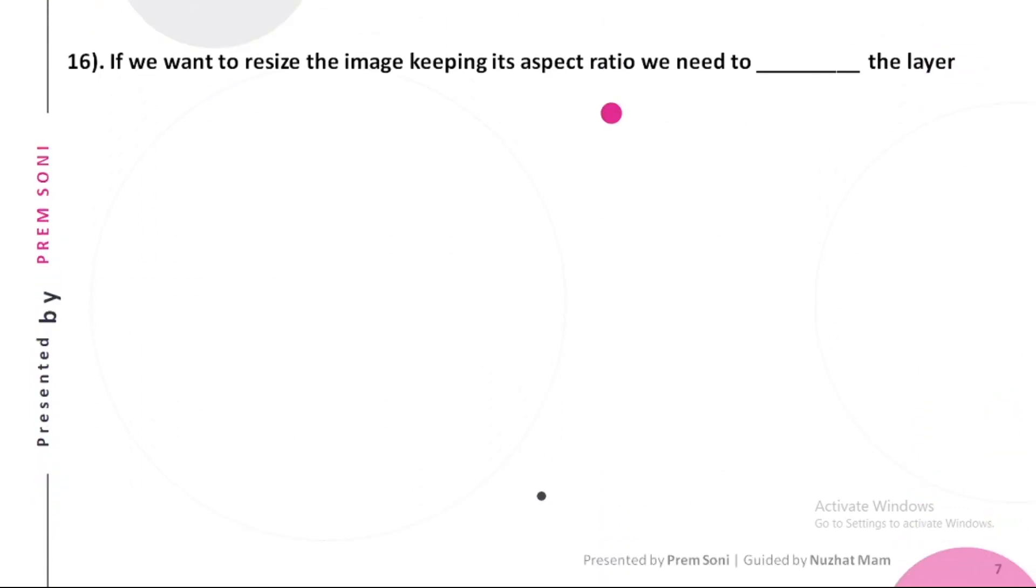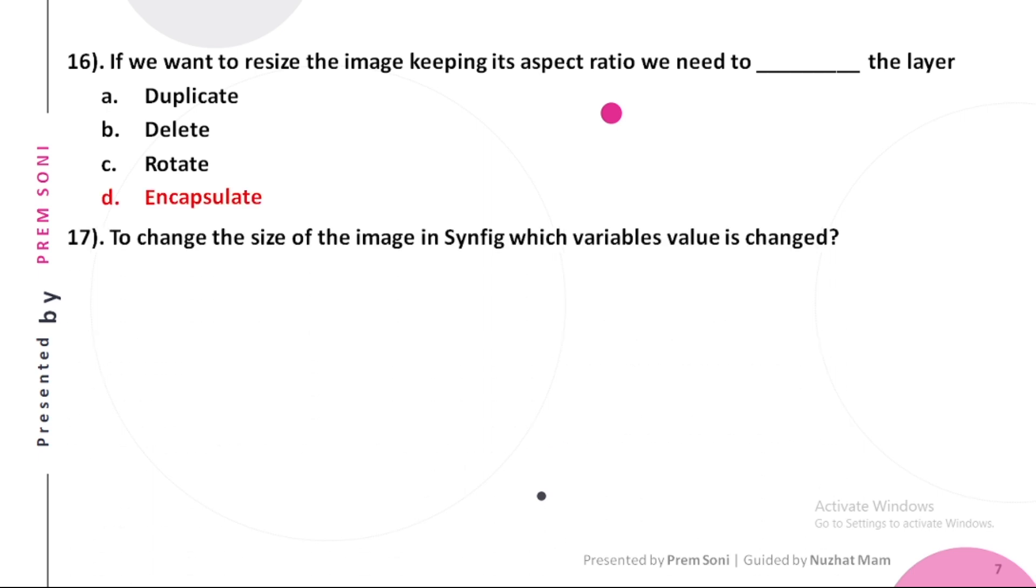Sixteenth, if we want to resize the image keeping its aspect ratio we need to dash the layer. Options are: a. Duplicate, b. Delete, c. Rotate, d. Encapsulate. The answer is Encapsulate. Seventeenth, to change the size of the image in Synfig, which variable's value is changed? Options are: a. Origin, b. Scale, c. Rotate, d. Amount. The answer is Amount.